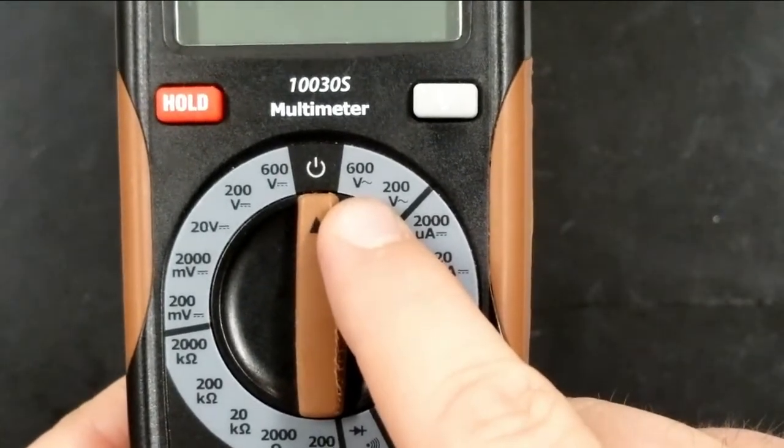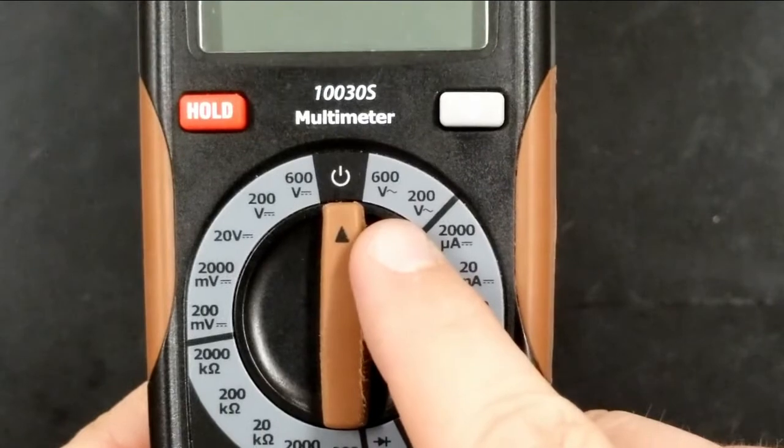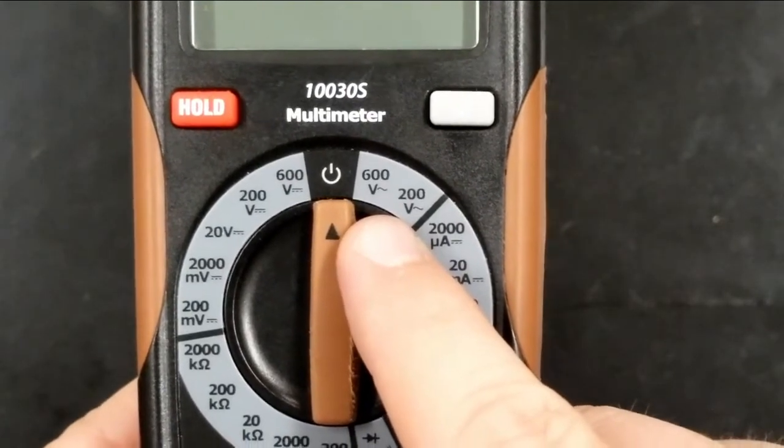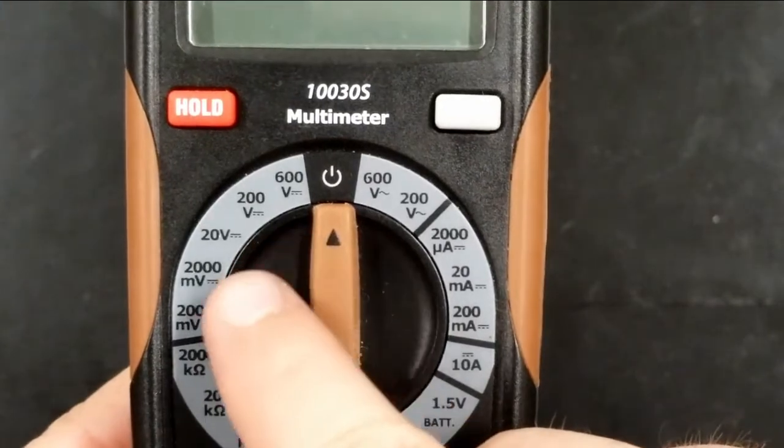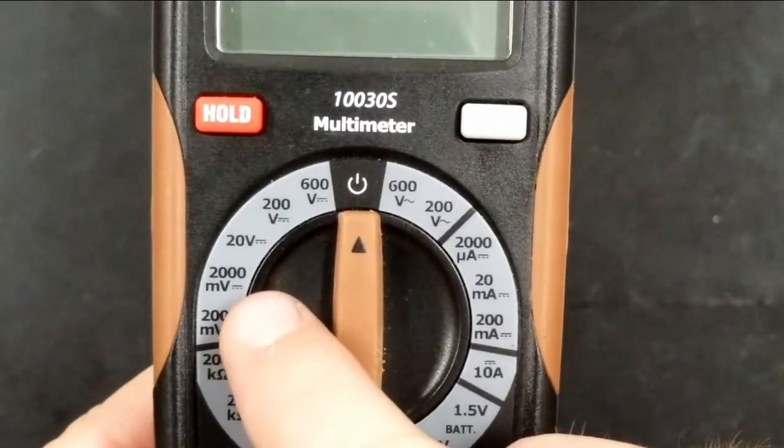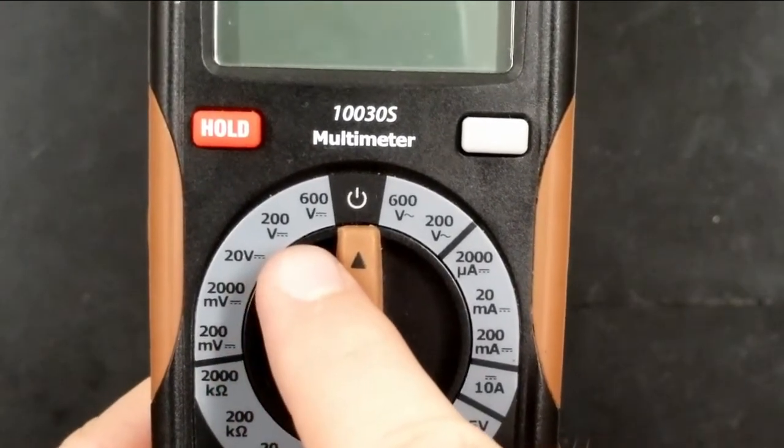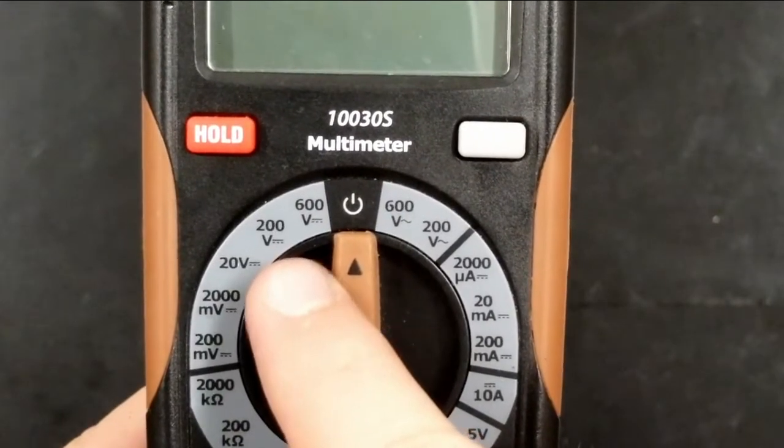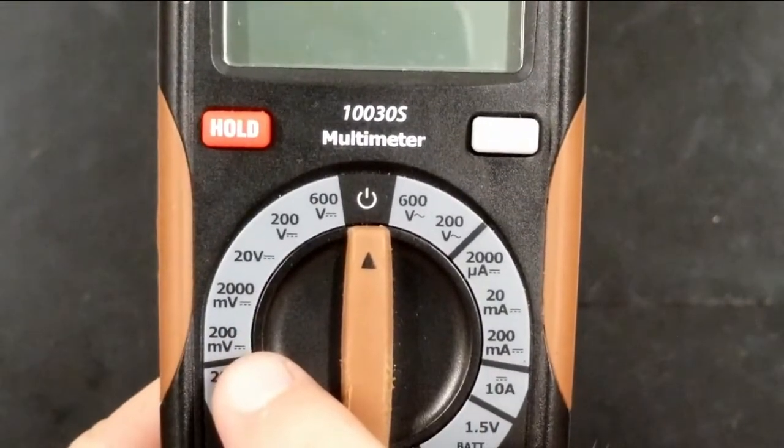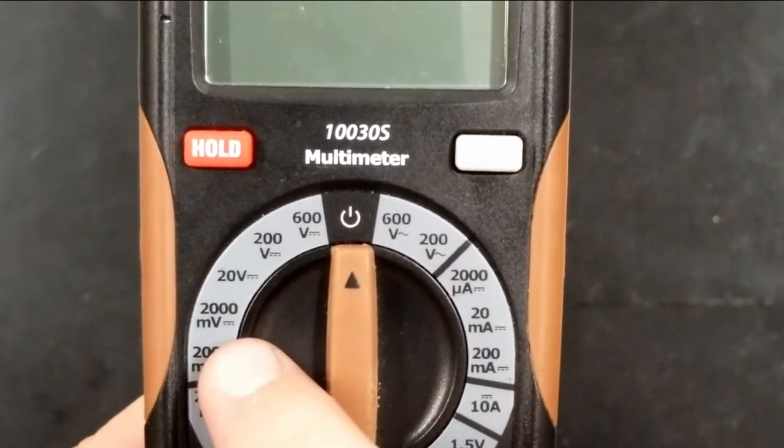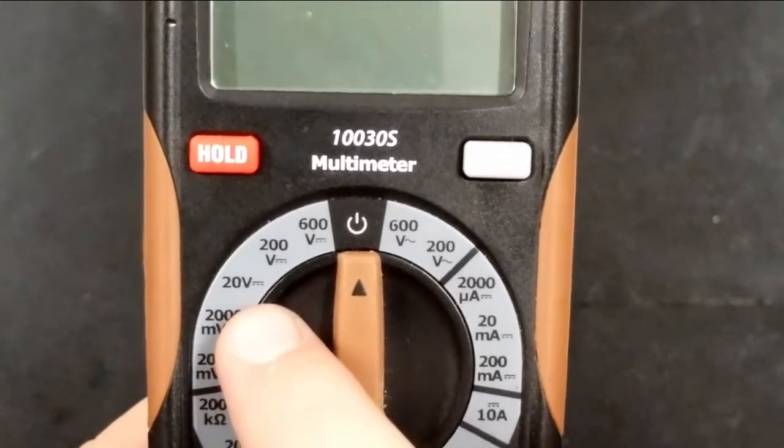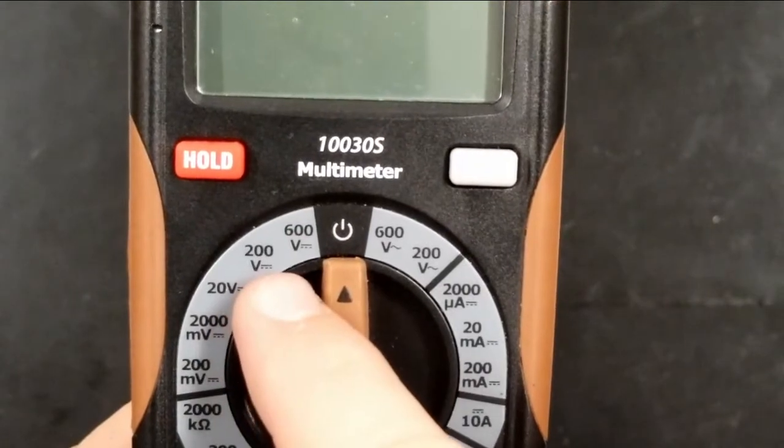The ones going to the right have a little tilde mark next to them, which indicates alternating or changing current. That's not what we're going to be dealing with. We're going to be dealing with constant or direct current. Those would be the readings over here on the left. The different settings represent the different maximum voltages that the voltmeter can read: 200 millivolts, 2,000 millivolts or 2 volts, 20 volts, 200 volts, or 600 volts.